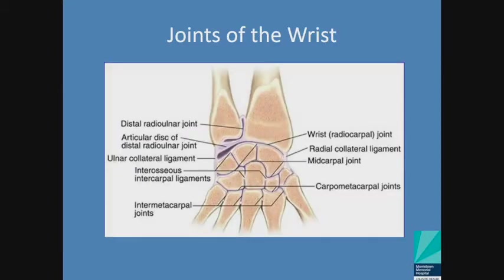Joints of the wrist: where the metacarpals meet this distal carpal row, those are your carpometacarpal articulations. The midcarpal joint refers to articulations between the proximal and distal carpal rows. The radiocarpal articulation is where the radius meets the scaphoid and the lunate. The ulnocarpal articulation is where the ulna meets the lunate and the triquetrum. Your distal radioulnar joint is where the radius and ulna articulate with each other.